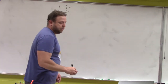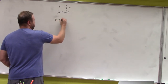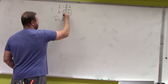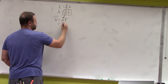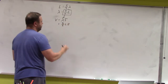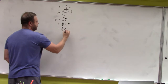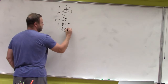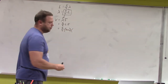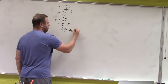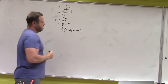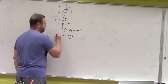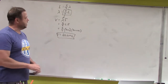Now we write the wave speed equation: v equals wavelength times frequency. Substituting our expression for wavelength: v equals two-fifths L times f. Plugging in two-fifths of three meters times a frequency of 50 hertz gives a wave speed of 60 meters per second.